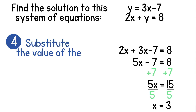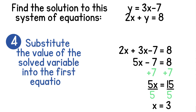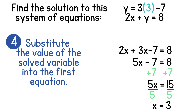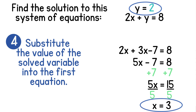Now we'll have to do our fourth step since we don't have the answer for y yet. So we'll take our first equation and replace x with 3, now that we know that x equals 3. So we get y is equal to 3 times 3 minus 7. 3 times 3 simplifies to 9, and 9 minus 7 gives us 2. So now we have our solution at x equals 3 and y equals 2.